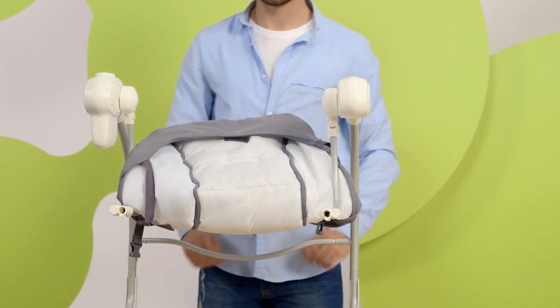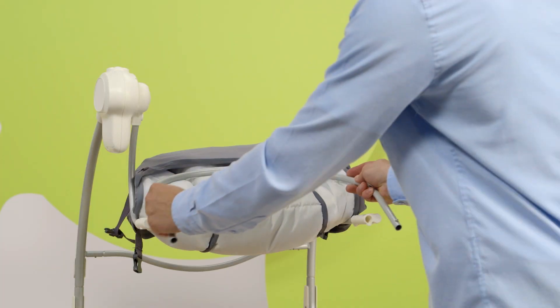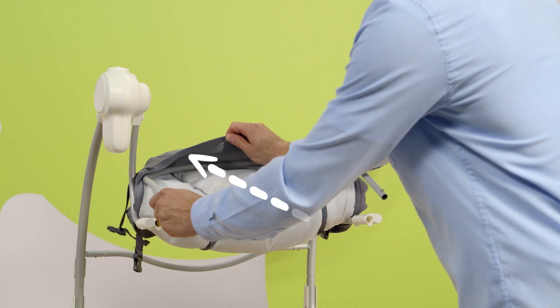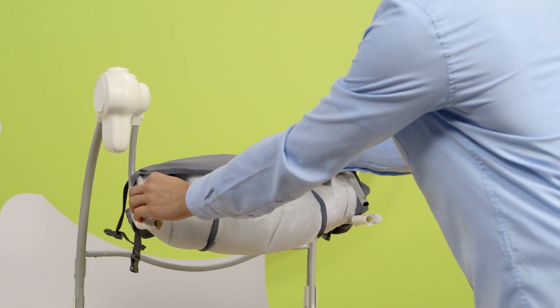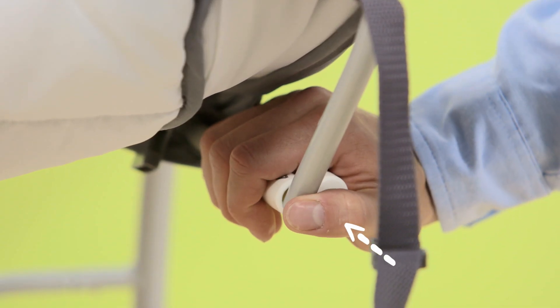Now for the assembly of the second U-shaped tube. But be careful, slide it first into the cover. Then bend the seat and insert the second tube into the holes in the front. The seat opens and the material is stretched.